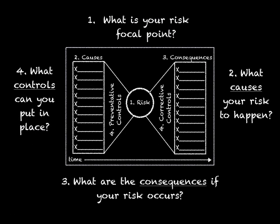And there you have it — in four simple steps, a basic risk bowtie. Feel free to jump between the four different steps, adding to your lists of causes, consequences and controls, and to the description of your risk focal point. Often, our understanding of what the risk really entails is built up gradually over time, as and when we collect more data and information.